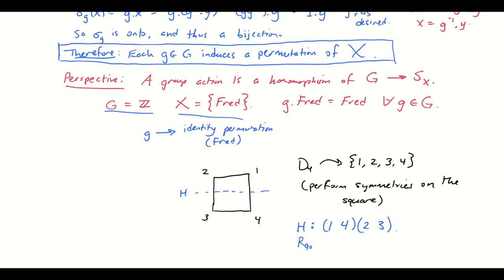And then we can develop a group action in this way. So for another example, R90 would send one to two, two to three, three to four, and four back to one. So R90 acts as a four cycle on the vertices one, two, three, and four.